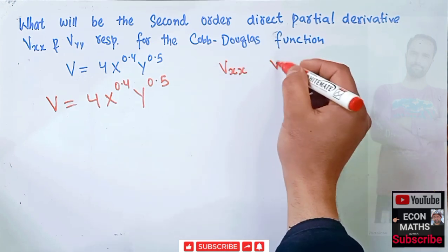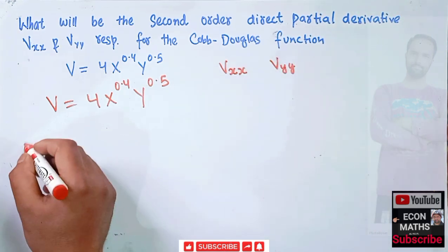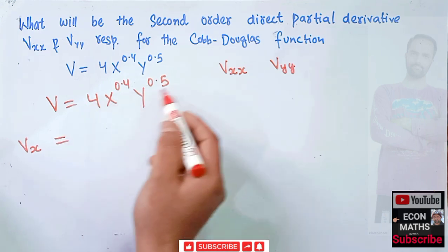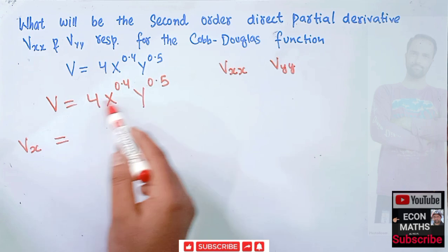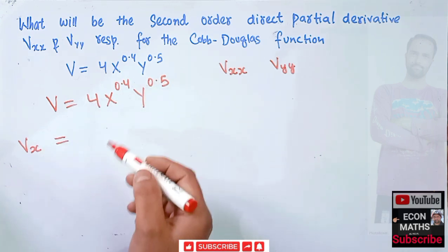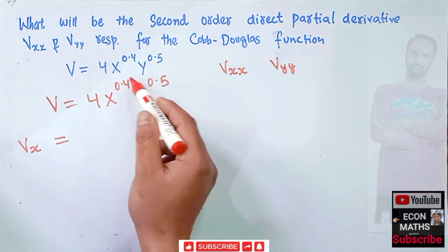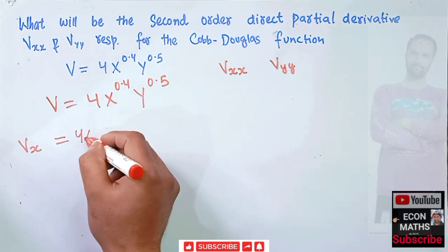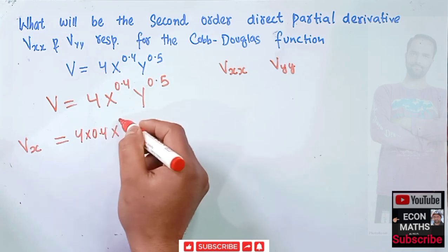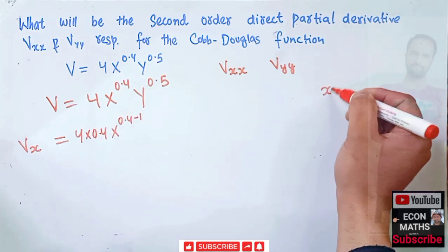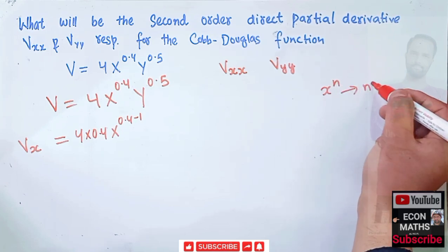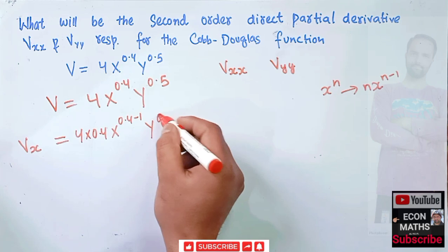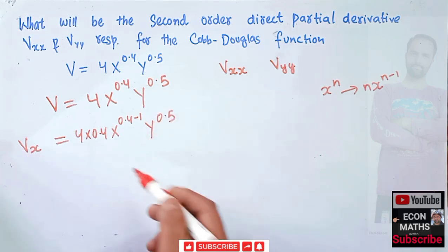First, we find vx — the first order partial derivative with respect to x. We differentiate this function partially with respect to x. Using the power function rule, x^0.4 gives 0.4 as the coefficient, so we get 4 * 0.4 * x^(0.4-1), and y^0.5 remains as is since we are partially differentiating with respect to x.